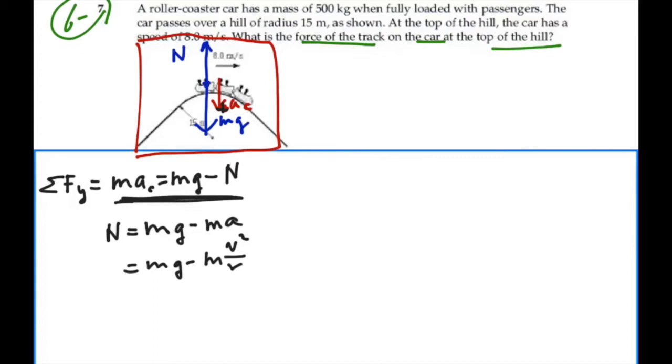Let's put in our numbers. This will be 500 kilograms times 9.8 minus 500 times the velocity squared, which is 8 meters per second squared, over the radius, 15.